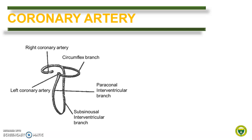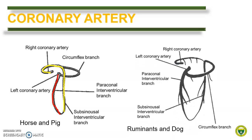Now let us compare the variation in the branching observed in the coronary arteries. The coronary arteries are the main blood supply of the heart itself; they are the first branch of the aorta, in particular the ascending aorta. There are two coronary arteries: the left and the right. The right coronary artery gives rise to the subsinusal interventricular branch, while the left coronary artery gives rise to the paraconal interventricular branch. This pattern is evident in horse and pig. However, in ruminants and dogs, the left coronary artery gives rise to both the paraconal and subsinusal interventricular branches.